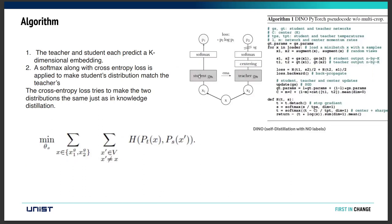As a result, each model — student and teacher — predicts a K-dimensional embedding. A softmax activation function is applied with cross-entropy loss so that the student distribution matches the teacher's. The K-dimensional embedding produced by the student is passed through softmax and then to the loss function, while in the teacher model they also apply centering, and there is an exponential moving average between the student and teacher models.